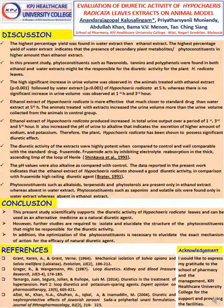The highest percentage yield was found in the water extract compared to the ethanol extract. This indicates the presence of secondary plant metabolites in higher amounts in the water extract. In this present study, phytochemicals such as flavonoids, tannins, and polyphenols were found in both ethanol and water extracts and might be responsible for the diuretic activity of Hypochaeris radicata leaves.